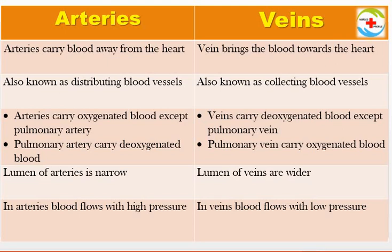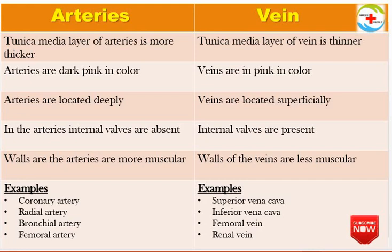Veins are collecting blood vessels. The pulmonary artery is an exception — it carries deoxygenated blood. The lumen of arteries is narrow while the vein lumen is wider. Arteries are very deep, dark pink or red, with high blood pressure. Veins are superficial, colorless or mild pink or green or blue, with low blood pressure. The tunica media layer is thick in arteries and thin in veins. There are internal valves in veins. The walls of arteries are more muscular; veins are less muscular.